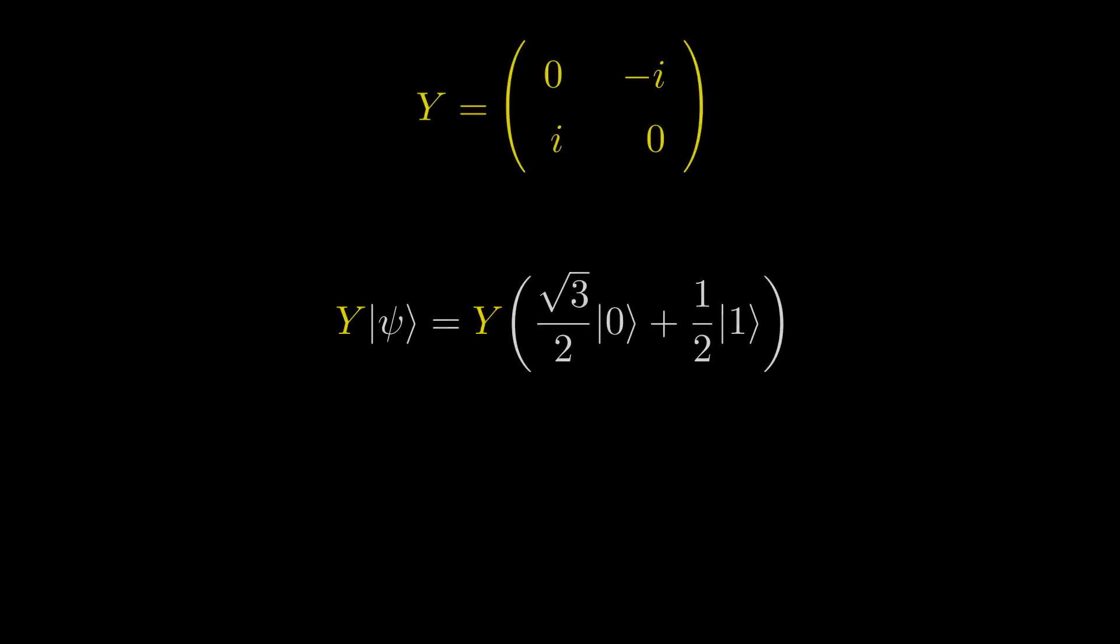If we want to apply a Y gate to this state in Dirac notation, the Y gets distributed into the state, then the Y changes the 0 state to the first column of the matrix, and the 1 state to the second column of the matrix.